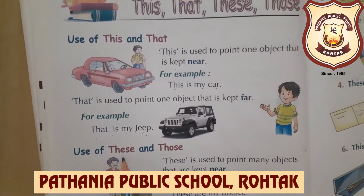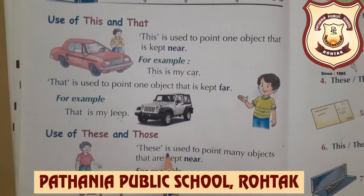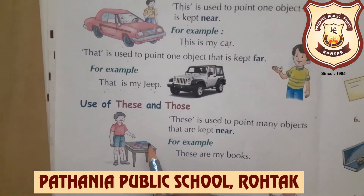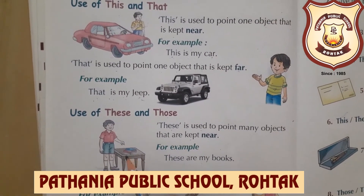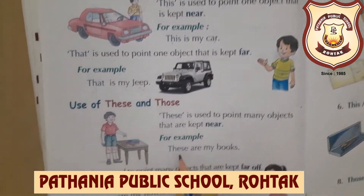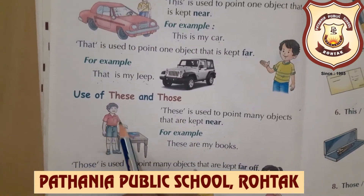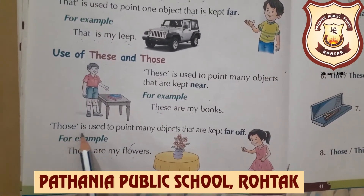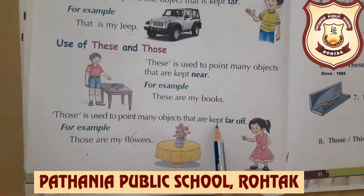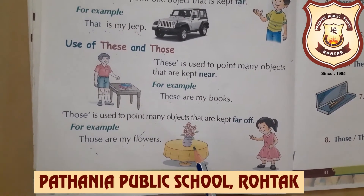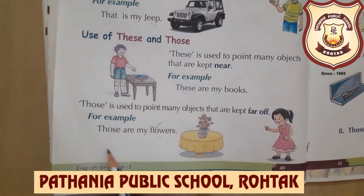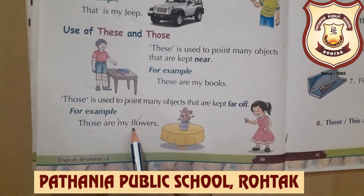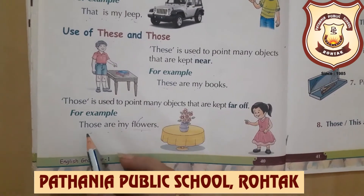Now use of these and those. 'These' is used to point to many objects that are kept near — more than one object lying near. For example, 'these are my books'. 'Those' is used to point to many objects kept far away. For example, a girl says 'those are my flowers' because the flowers are many and far away.